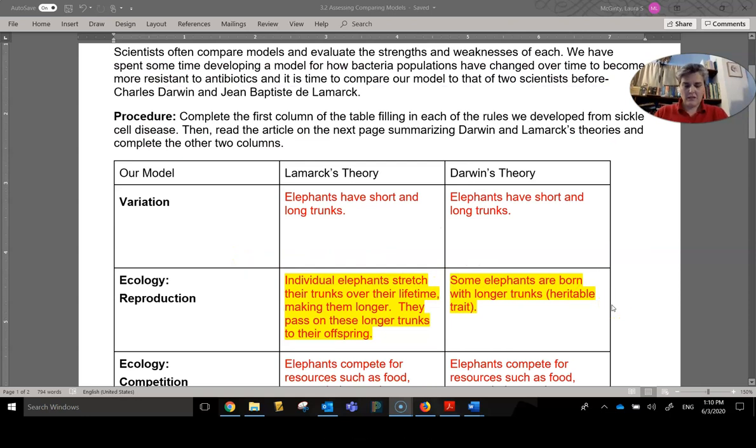The ecology of reproduction. Lamarck's theory states that elephants will stretch their trunk out over their lifetime, which then makes them longer. And then they pass these longer trunks off to the offspring. So that means that with a constant use of reaching and stretching and trying to get the food and resources that they need, their trunks grow longer and that is what is passed along to the offspring. Darwin, on the other hand, said that some elephants are born with longer trunks and others are not. This is a trait that is inherited from the parent generation. So they're born with that particular trait. It's a genetic base. Primary difference there.